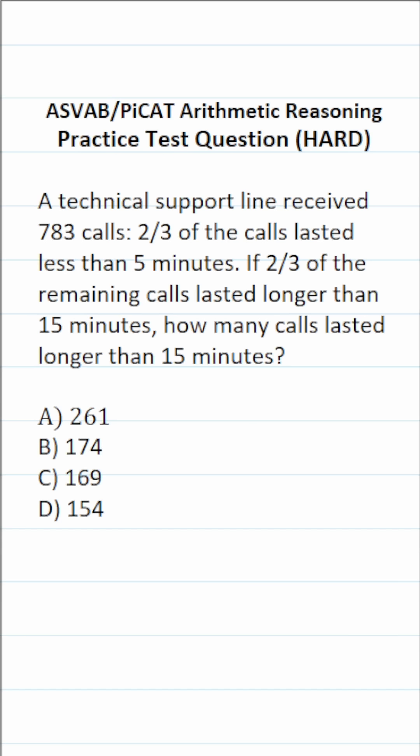This can be somewhat of a challenging problem, so let's break it down step by step. We know that they received 783 calls in total. Two-thirds of those calls lasted less than five minutes. That said, we know that if two-thirds of the calls lasted less than five minutes, then one-third of the calls went beyond five minutes.